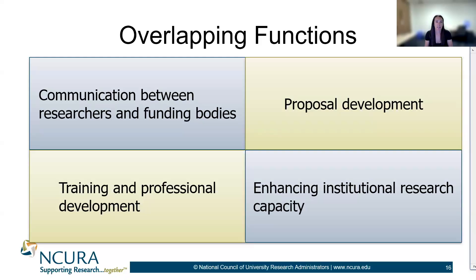Fourth is enhancing institutional research capacity. Both functions collaborate on developing long-term strategic plans that align with institutional goals and research priorities. RD often takes the lead in identifying emerging research trends while RA ensures that these plans include robust administrative and compliance frameworks.